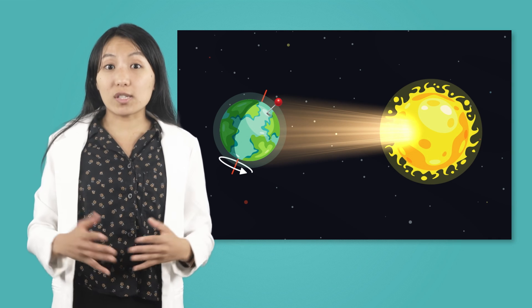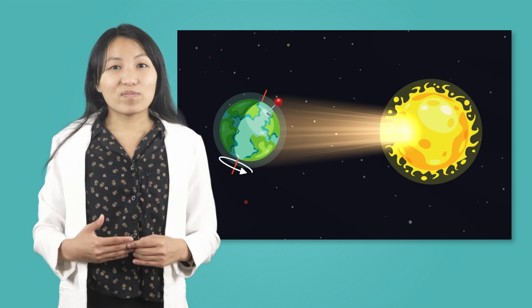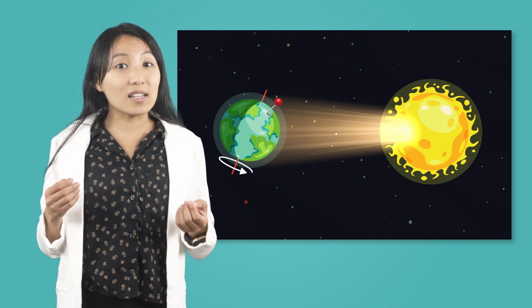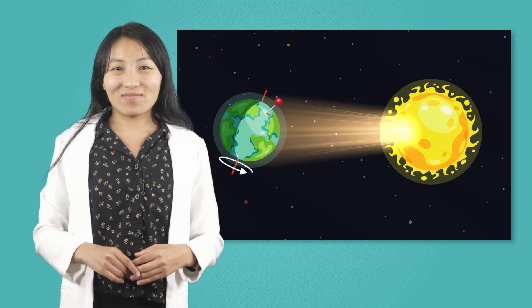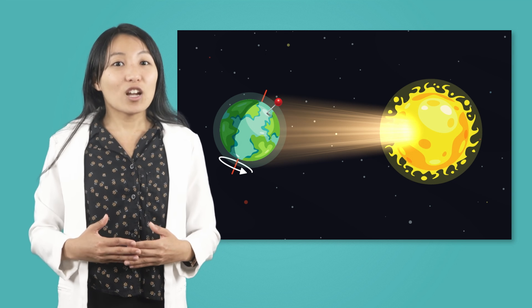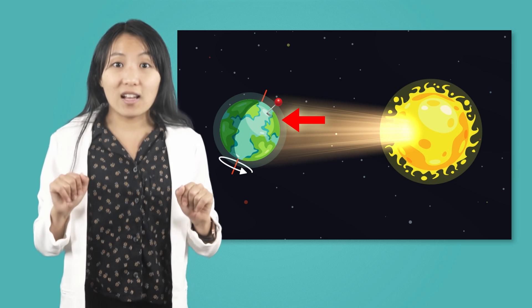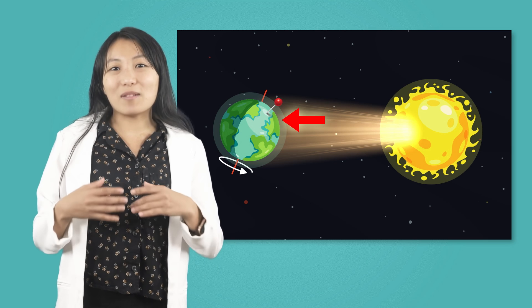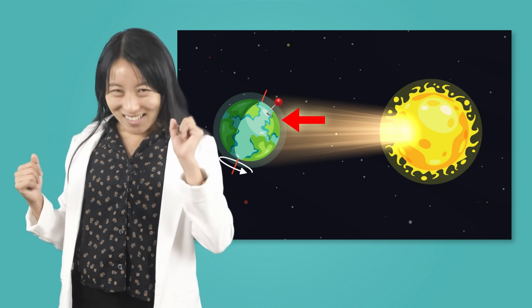Now the Earth has continued its revolution, and the Northern Hemisphere, or where I am, is tilted toward the Sun instead. Based on what we observed with the flashlight, what season do you think it is where there is more direct sunlight? I am getting more direct sunlight because my hemisphere of Earth is tilted toward the Sun. This means I am experiencing warmer temperatures and more daylight. It must be summer!